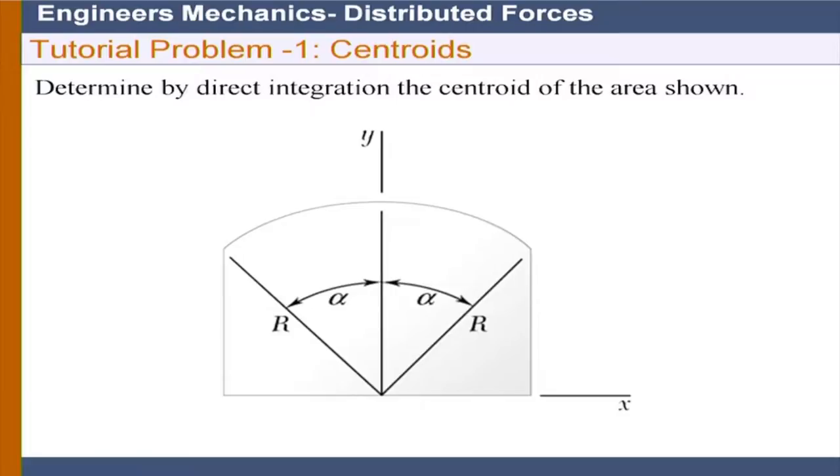Just look at the problem carefully. There is a circular sector at the middle that is defined by the angle alpha and alpha, and then you have two triangular parts on the right hand side and on the left hand side. Remember it can be done in both approaches: one is the direct integration, the other one is using the composite area concept.